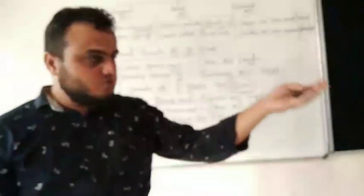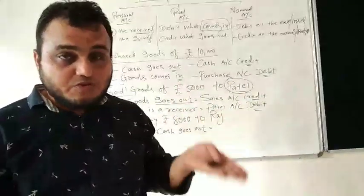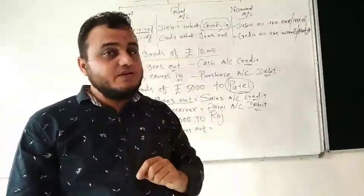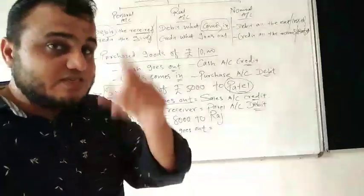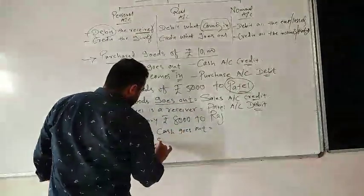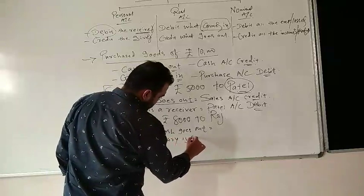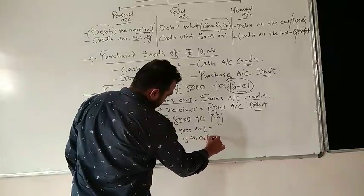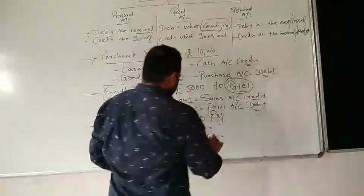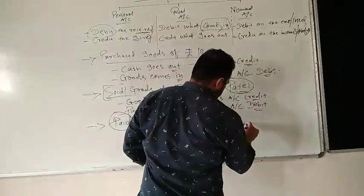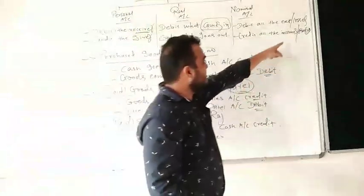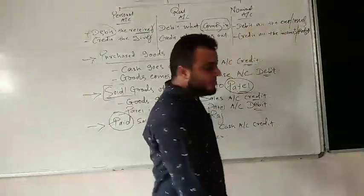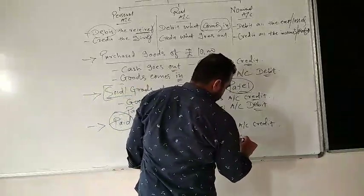Something coming back? No — goods or assets are not coming in. Is it income or expense? Salary is an expense. So: cash goes out — Cash Account is credited. Salary is an expense — expense means debit — so Salary Account is debited.